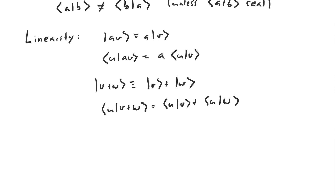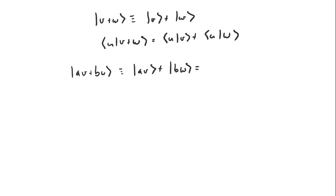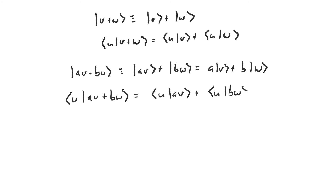So putting these two things together: if we have some vector that's a linear combination of two other vectors, let's say av plus bw, then taking the inner product of u and av plus bw is the same thing as multiplying the inner product of u and v by the number a and adding that to the inner product of u and w multiplied by the number b.